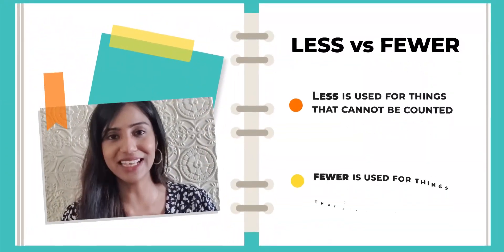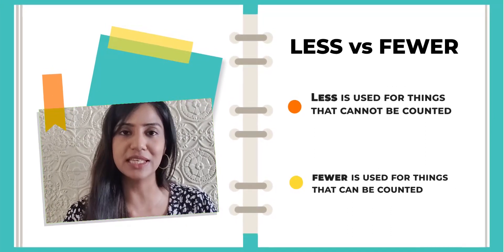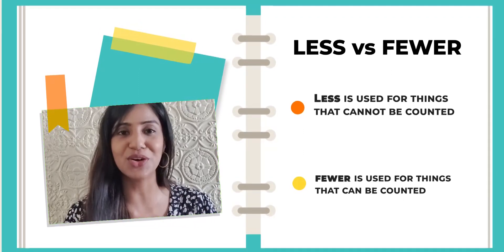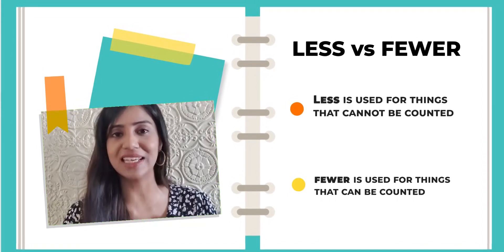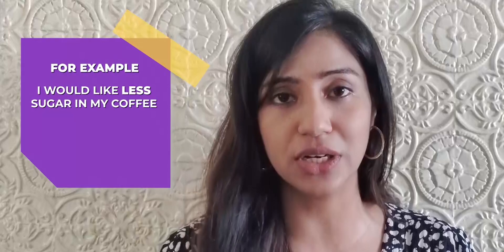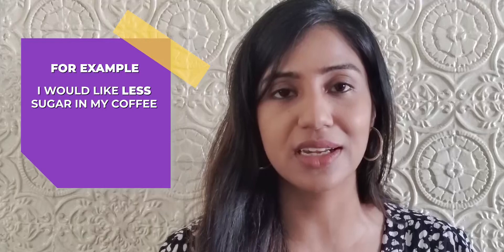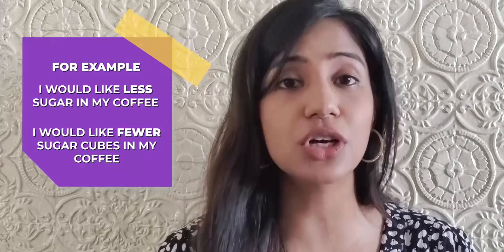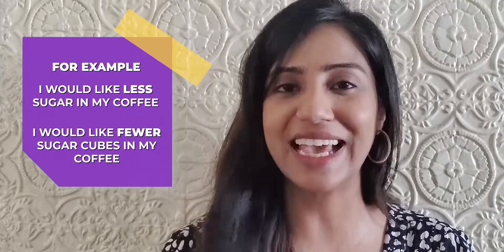Number 5: less versus fewer. Less is used when we are talking about things that cannot be counted, such as sand, sugar, or salt. Fewer is used for things that can be counted. For example: I would like less sugar in my coffee — we use less because sugar cannot be counted. However, I can say I would like fewer sugar cubes in my coffee, because sugar cubes can be counted.